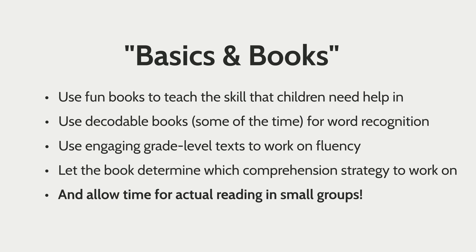B is for basics and books. The first thing you want to make sure you're doing is using fun, engaging, high-interest books to teach the skills that children need help with. You can use decodable books some of the time — you don't have to use them all of the time if you're working on word recognition skills. For fluency, you can use engaging grade-level texts. For comprehension strategies, let the book determine which strategy you're going to work on. Also, make sure you allow time for actual student reading in the small groups.